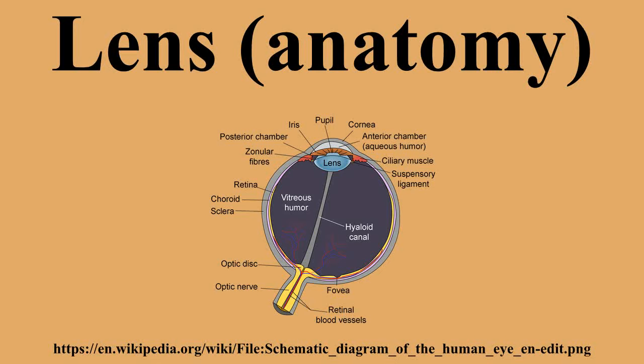The lens capsule is a smooth, transparent basement membrane that completely surrounds the lens. The capsule is elastic and is composed of collagen. It is synthesized by the lens epithelium and its main components are type 4 collagen and sulfated glycosaminoglycans. The capsule is very elastic and allows the lens to assume a more globular shape when not under the tension of the zonular fibers, which connect the lens capsule to the ciliary body. The capsule varies from 2 to 28 micrometers in thickness, being thickest near the equator and thinnest near the posterior pole.